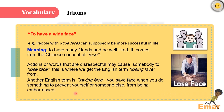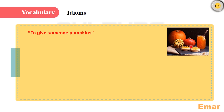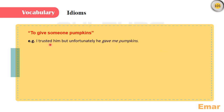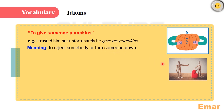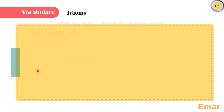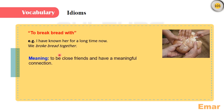The next idiom: to give someone pumpkins. For example, I trusted him but unfortunately he gave me pumpkins. The meaning: to reject somebody or turn someone down. To break bread with — for example, I have known her for a long time now, we broke bread together. The meaning: to be close friends and have a meaningful connection.